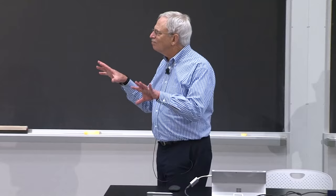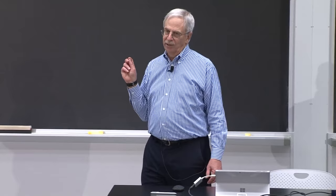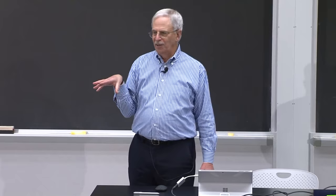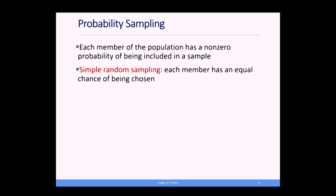Backing up for a minute, let's talk about how sampling is done when you are not running a simulation. You want to do what's called probability sampling, in which each member of the population has a non-zero probability of being included in a sample. We'll spend most of our time on something called simple random sampling, where each member of the population has an equal probability of being chosen. So there's no bias.